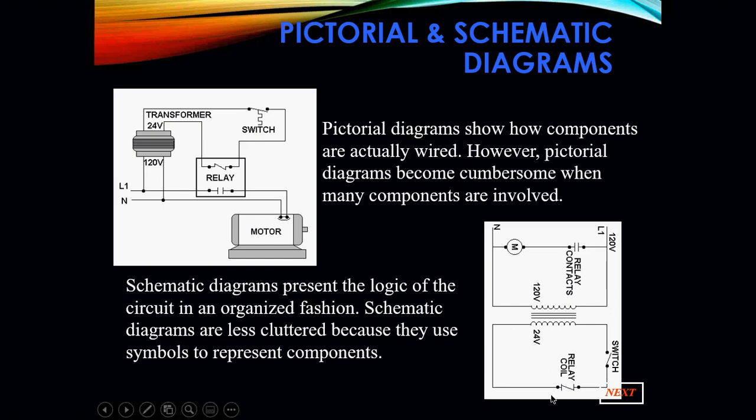Right here, big circle. That switch has to close first in order for the next line and for the next component in that line to operate. And in this case, it's a coil. Once that coil gets energized, everything happens on my 120 volt side. My contact will close, which will then energize my motor.